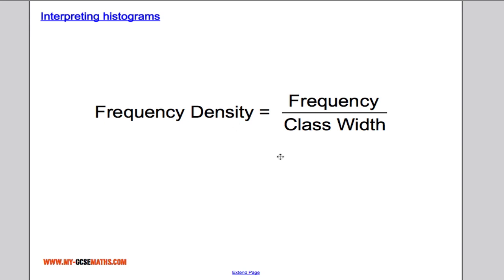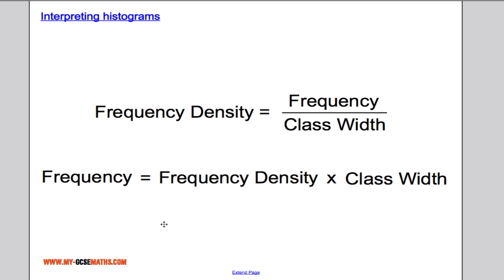Now if you remember the previous video on drawing histograms, you should remember a really important fact, and that's we use frequency density on the y-axis, and that's calculated by doing the frequency divided by the class width. Now this has a very important feature. If I cross multiply and multiply both sides by class width, I can get a formula for frequency. So the frequency is given by the frequency density times by the class width. In simple terms that means that the area of each bar will tell us the frequency. So let's see how that affects what we need to do to answer some questions.